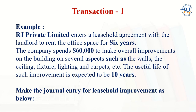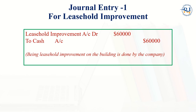It will be recognized as leasehold improvement on the balance sheet. For example, in transaction number one: RJ Private Limited enters a leasehold agreement with the landlord to rent the office space for six years, and the company RJ Private Limited spends sixty thousand dollars to make overall improvements on the building covering walls, ceiling, fixtures, lighting, and carpet. The useful life of such improvements is expected to be ten years. The general entry for the leasehold improvement is: Leasehold Improvement account — debit sixty thousand; Cash — credit sixty thousand, being leasehold improvement on the building done by the company.